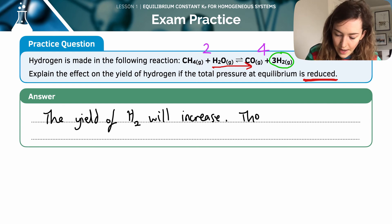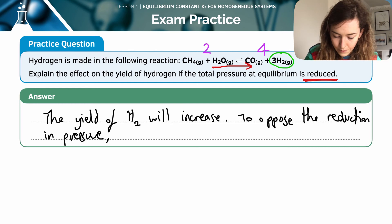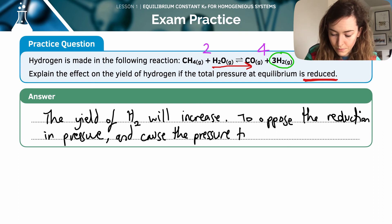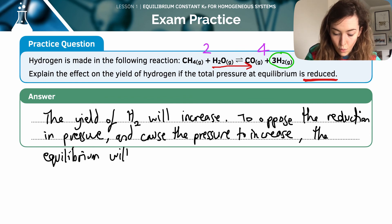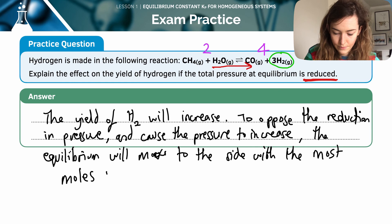And then I'll say to oppose the reduction in pressure and cause the pressure to increase back to equilibrium. So that's why we're doing it. The equilibrium will move to the side with the most moles of gas. Most gaseous moles. This is the forward reaction.